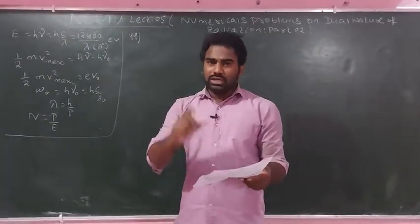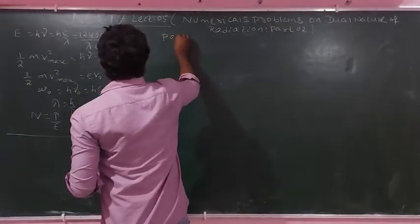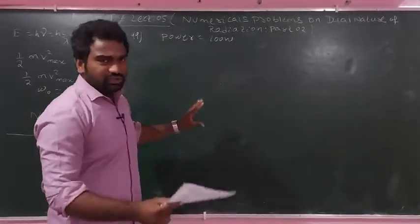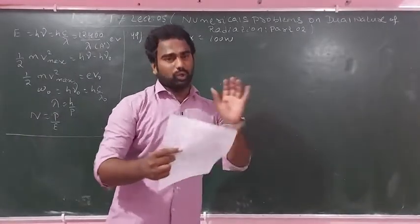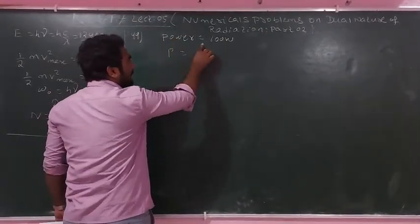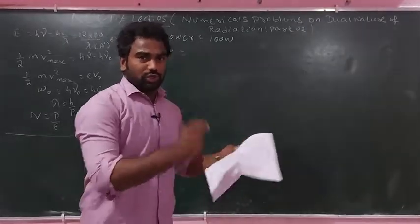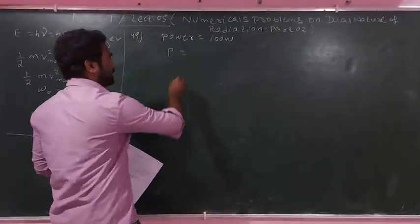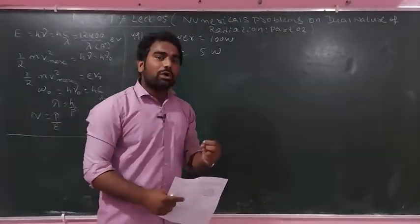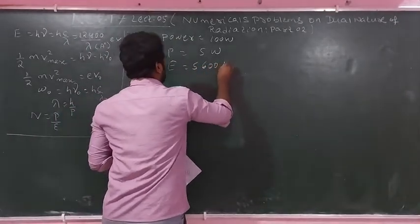We have an electric bulb with 100 watt power. The power is 100 watt, and 5% of the energy supplied is radiated as visible light. So the effective power for visible light is 5% of 100 watt, which equals 5 watt. The wavelength is 5600 angstrom.